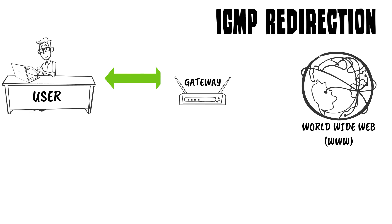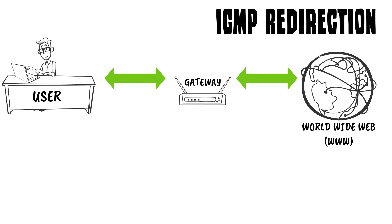ICMP routes packets through a gateway onto an optimal path in the network. When the path is not optimal, an error message is sent to the sender of the IP packet to redirect any following packets through a different gateway.